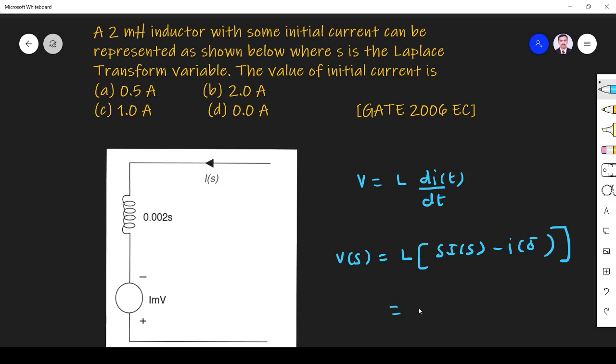So this one I can write as S I of S into L minus L I of 0.